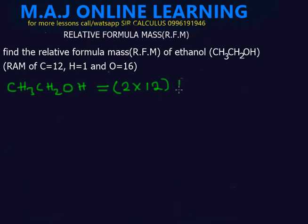So that's 12 plus we do the same with hydrogen. Counting the hydrogens, we have 3 plus 2 plus 1, which gives us 6 hydrogens total. The relative atomic mass of hydrogen is 1. Then for oxygen, we have 1 oxygen atom.